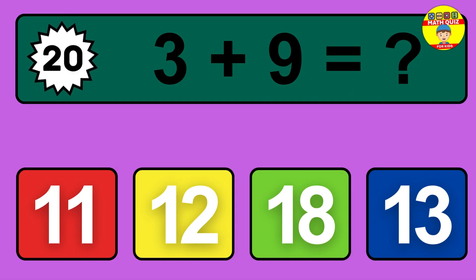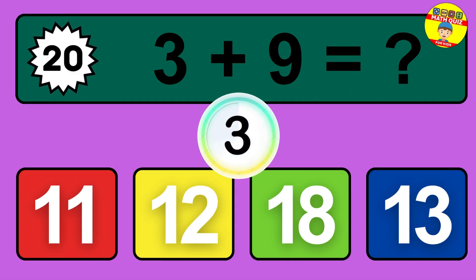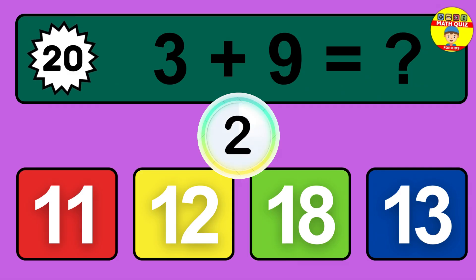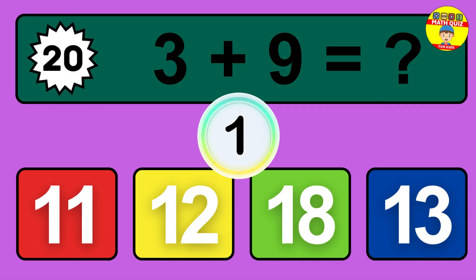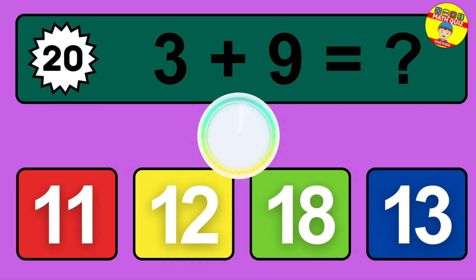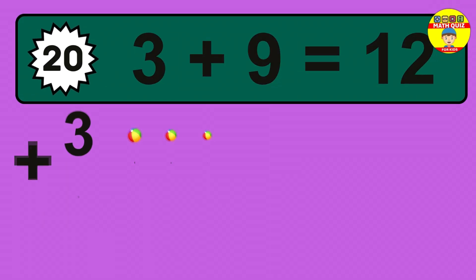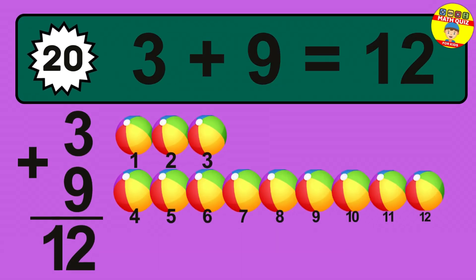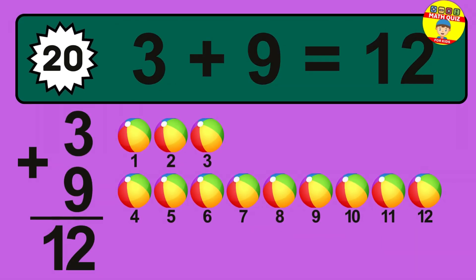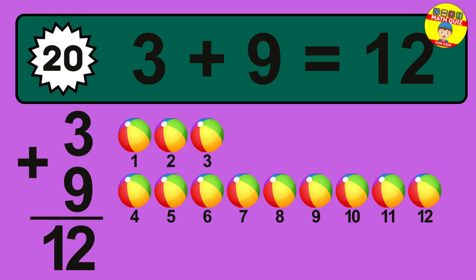Question 20. 3 plus 9 equals what? So the answer is 3 plus 9 is 12.